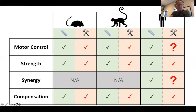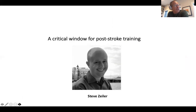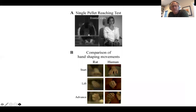Now I want to switch to making a case for why it's so important to go early, by discussing critical periods. This is work done in a mouse model by Steve Zeiler, a stroke neurologist at Johns Hopkins, done in collaboration with me and others. What he wanted to demonstrate is that there is a window of opportunity for recovering control after stroke in a mouse model.